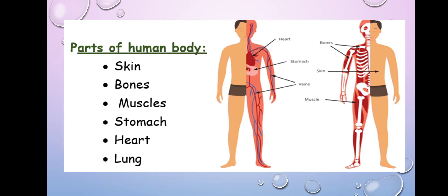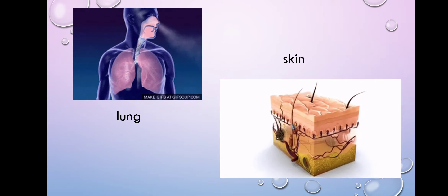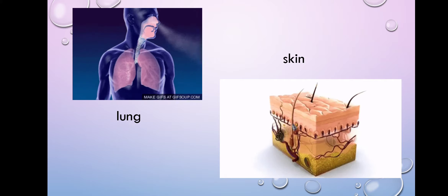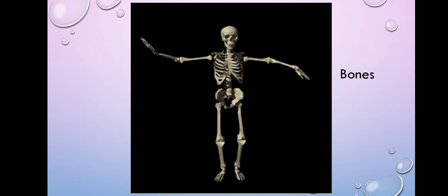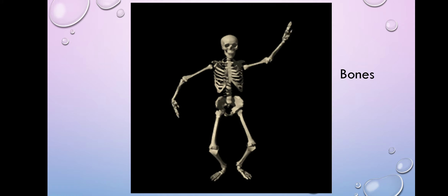Today we'll explain parts of our human body, like skin, bones, muscles, stomach, heart and lung. This is our lung and this is our skin. Muscle and heart — yes, this is a real heart. And our bones, the skeleton, you know it.